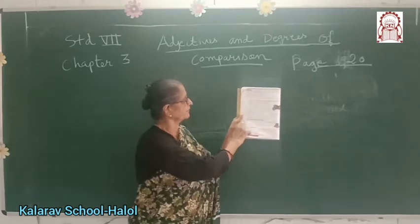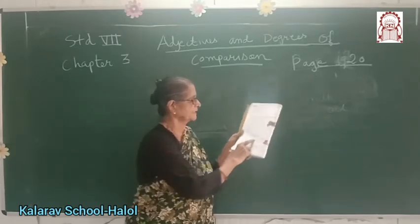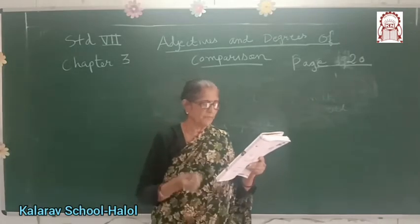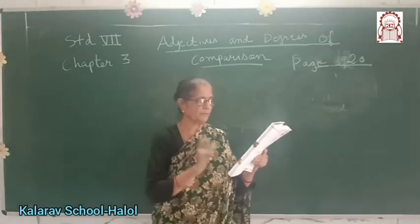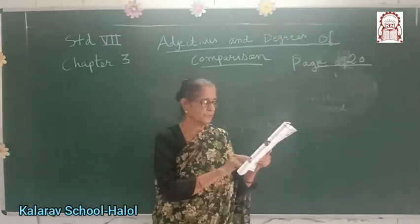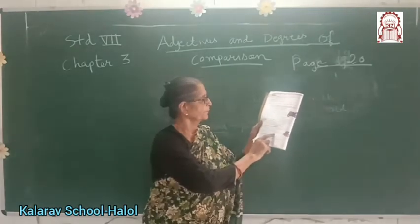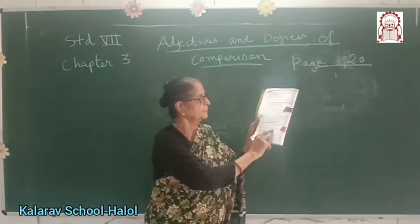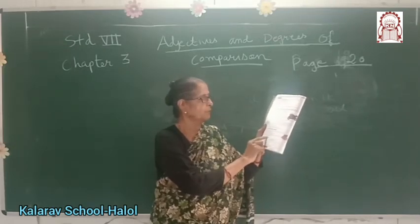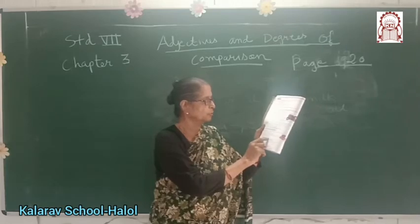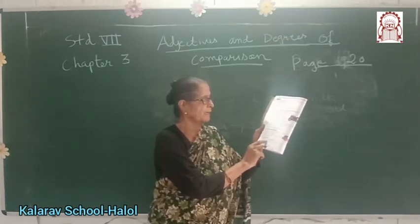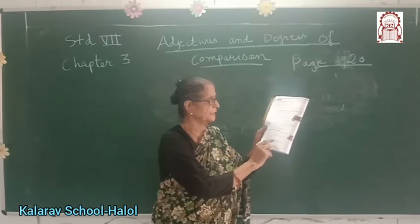Number five — interrogative adjectives. These adjectives are used along with nouns to ask questions. For example: which book will you buy? Interrogative adjectives are what and which. Number six — possessive adjectives. Possessive adjectives show possession or belonging. Example: his books are on the table. They answer the question whose. Possessive adjectives are my, our, your, his, her, hers, and its.